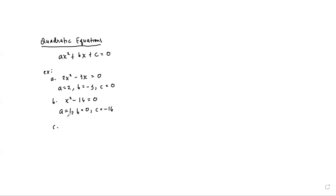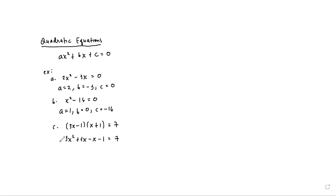Another quadratic equation would be (3x minus 1) times (x plus 1) equals 7. But this one is not in standard form, so we shall use the FOIL method first on the left side. So we get 3x times x which is 3x squared, 3x times 1 is positive 3x, negative 1 times x is negative x, and negative 1 times positive 1 is negative 1, equals 7. Combining like terms on the left side gives us 3x squared, where 3x minus x is positive 2x, and then we have minus 1 equals 7.